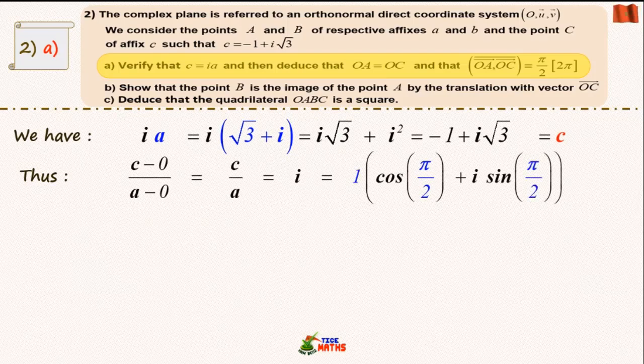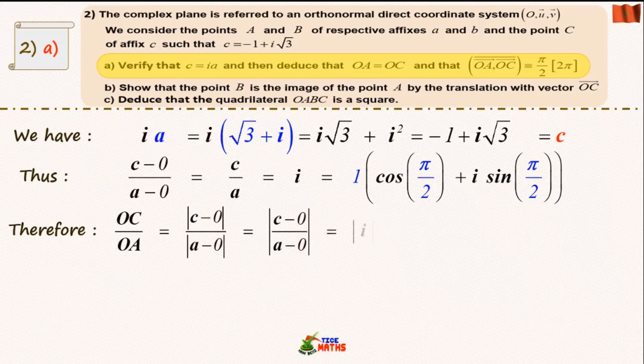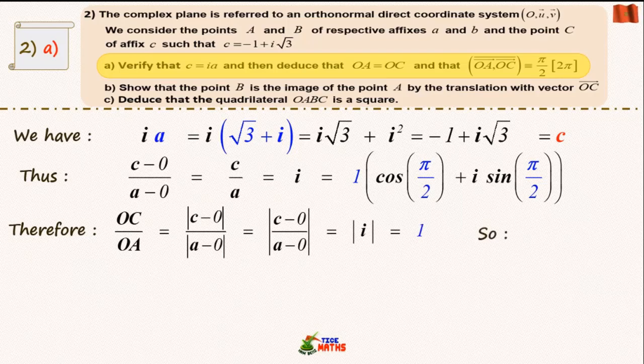Using the modulus property of a quotient and the relation between modulus and distance, we get distance OC over distance OA equals 1, so distance OC equals distance OA.